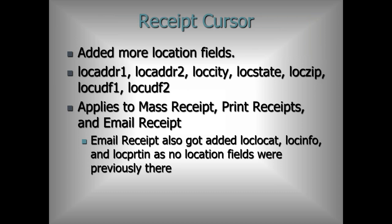Some changes in the receipt cursor: the biggest thing is we've added more location fields — local address, city, state, zip, and the two UDF fields. This applies to mass receipt, print receipt, and email receipt. I also noticed that email receipt was missing basically all the location fields, so I added the loc info and the print-in field — the logical 'show location' field. That stuff is now available by default in those areas.